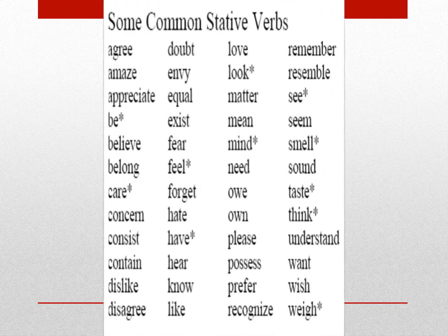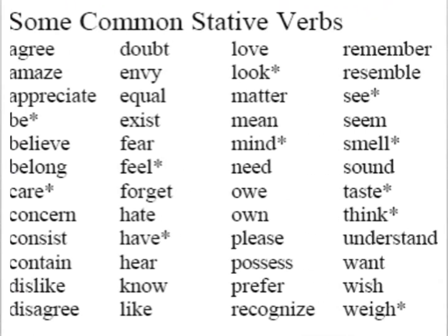یه نقطه خیلی مهمی که اینجا خودش رو نشون میده و باید حتماً بدونید، دونستن فعلهای Stative هست. این فعلها بهشون میگن Stative Verbs. در واقع این فعلها فعلهایی هستن که به هیچ عنوان ing نمیگیرن. پس توی هیچ tense continuous ای نمیتونید استفاده کنید. مثلاً میخواید بگید من با تو موافقم. هیچ وقت نمیتونید بگید I am agreeing. این کاملاً غلطه. حتماً باید از Simple Present استفاده کنید.